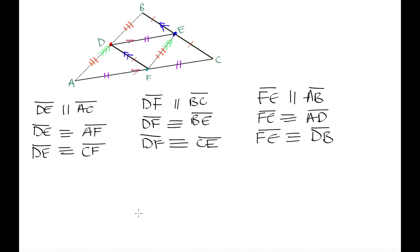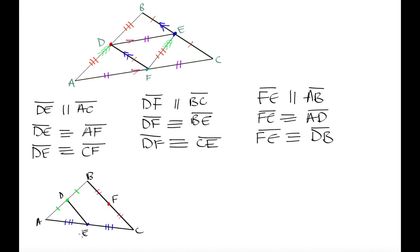To summarize the mid-segment theorem: if you create points halfway along each side of a triangle, joining the midpoints of any two sides produces a line that is parallel to the third side and half the length of that third side. Knowing this allows you to solve problems involving triangles where midpoints are marked splitting each side into two equal parts.